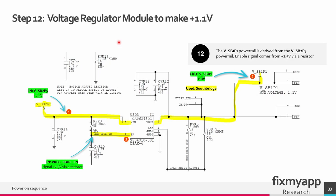In step 12 we create the 1.1 volt power rail, generated from the 2.5 volt power rail — also the power supply for this IC. We need an enable signal, which is created from the 2.5 volt. When this voltage is present and the enable signal is present, the IC turns on and starts generating the 1.1 volt power rail.